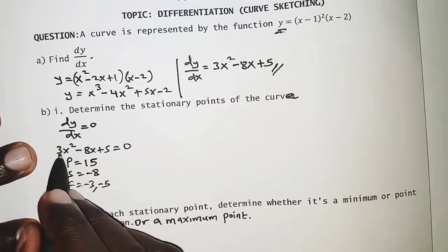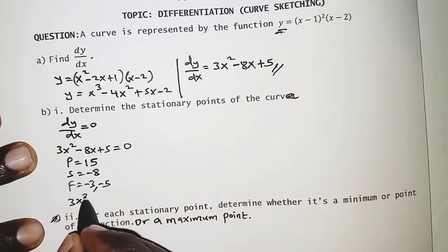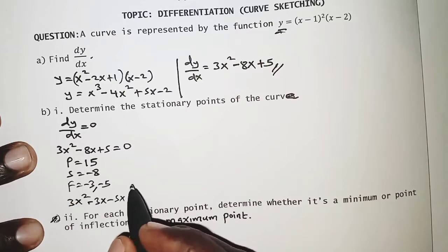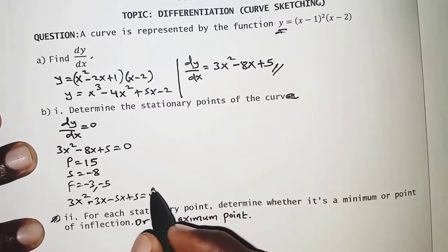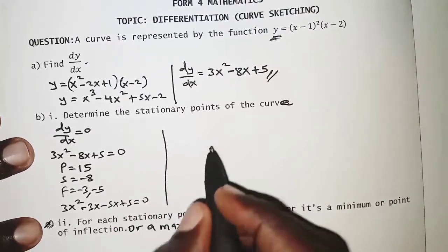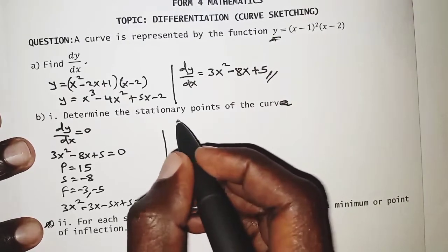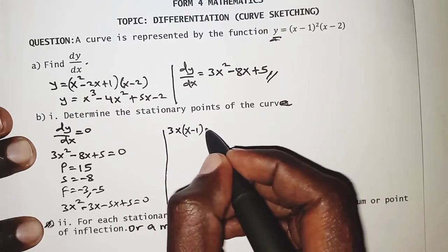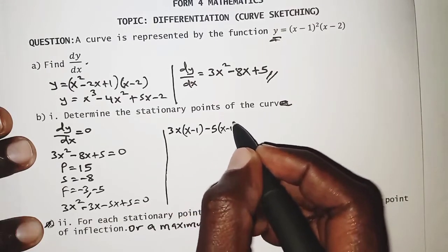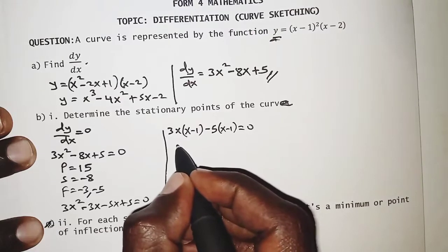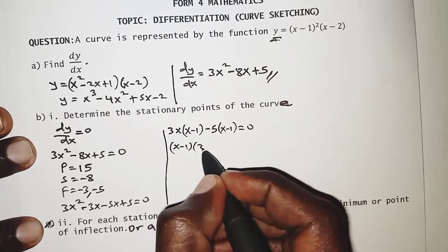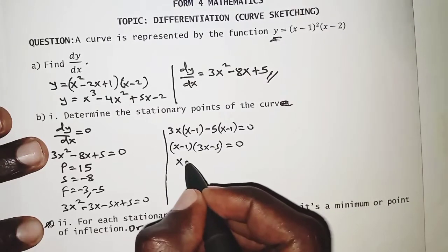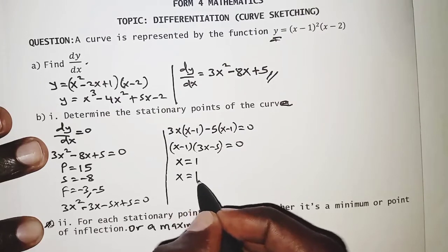We rewrite the equation as 3x² − 3x − 5x + 5 = 0. Factorizing: 3x(x − 1) − 5(x − 1) = 0, which gives (x − 1)(3x − 5) = 0. Therefore x = 1 and x = 5/3 (one and two thirds).